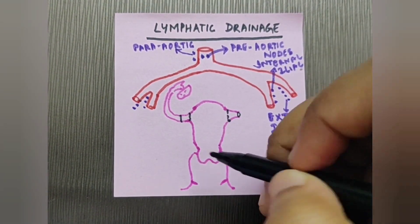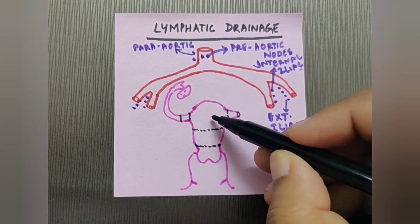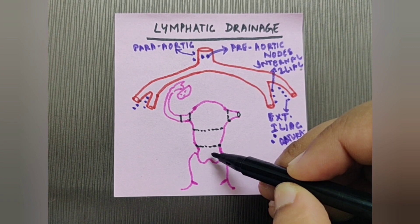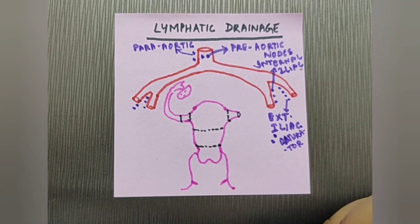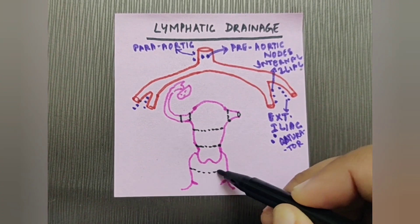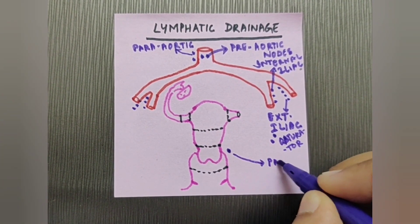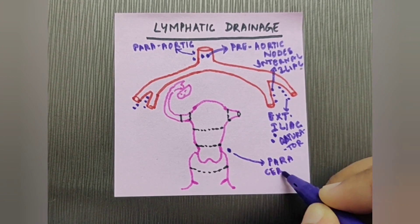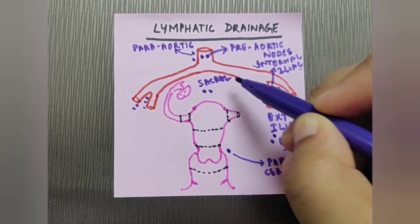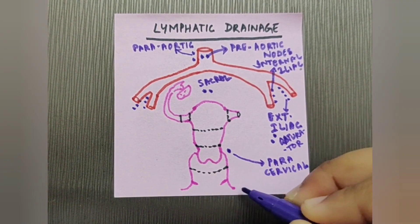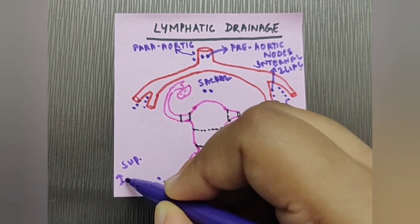I'm demarcating the isthmus of the fallopian tube, the upper and lower part of the body of the uterus, and the cervix. The vagina is divided into upper and lower halves. Here we also have the para-cervical lymph nodes, the sacral lymph nodes, and the superficial inguinal lymph nodes.